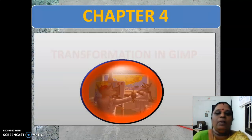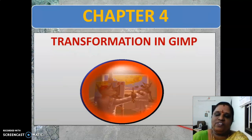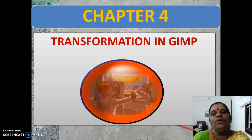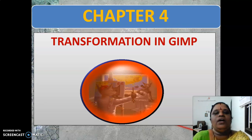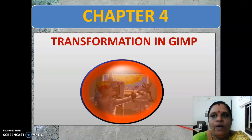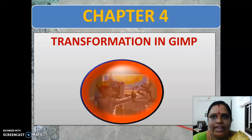Chapter 4 is about transformation in GIMP. In the last 3 lessons we saw the introduction of GIMP, and about the selection tool and paint tool. What are all the GIMP interface elements we have? Only the basics of GIMP — we saw the selection tool and paint tool.